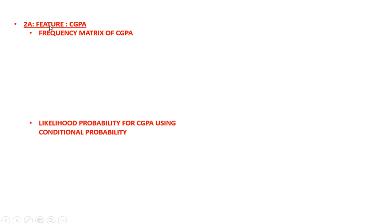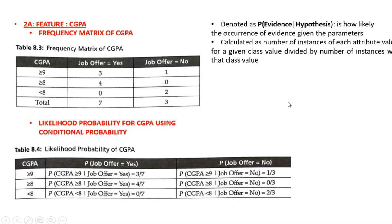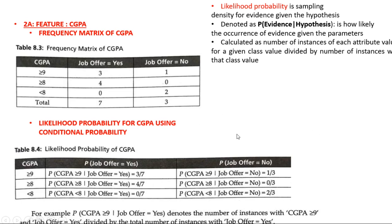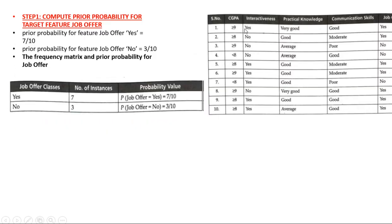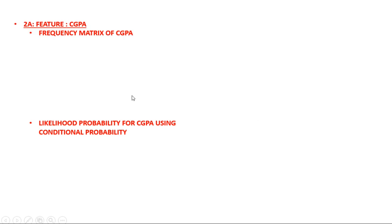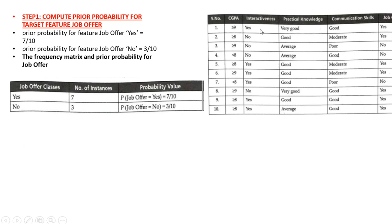Let's focus on the first feature: CGPA. Step 2a — find the frequency matrix for CGPA and the likelihood probability for CGPA. The different values of CGPA are: greater than or equal to 9, greater than or equal to 8, and less than 8. For each value, count how many times you got job offer yes and how many times job offer no. Referring to the training dataset for CGPA ≥ 9, the count for job offer yes is 3 and for no is 1.